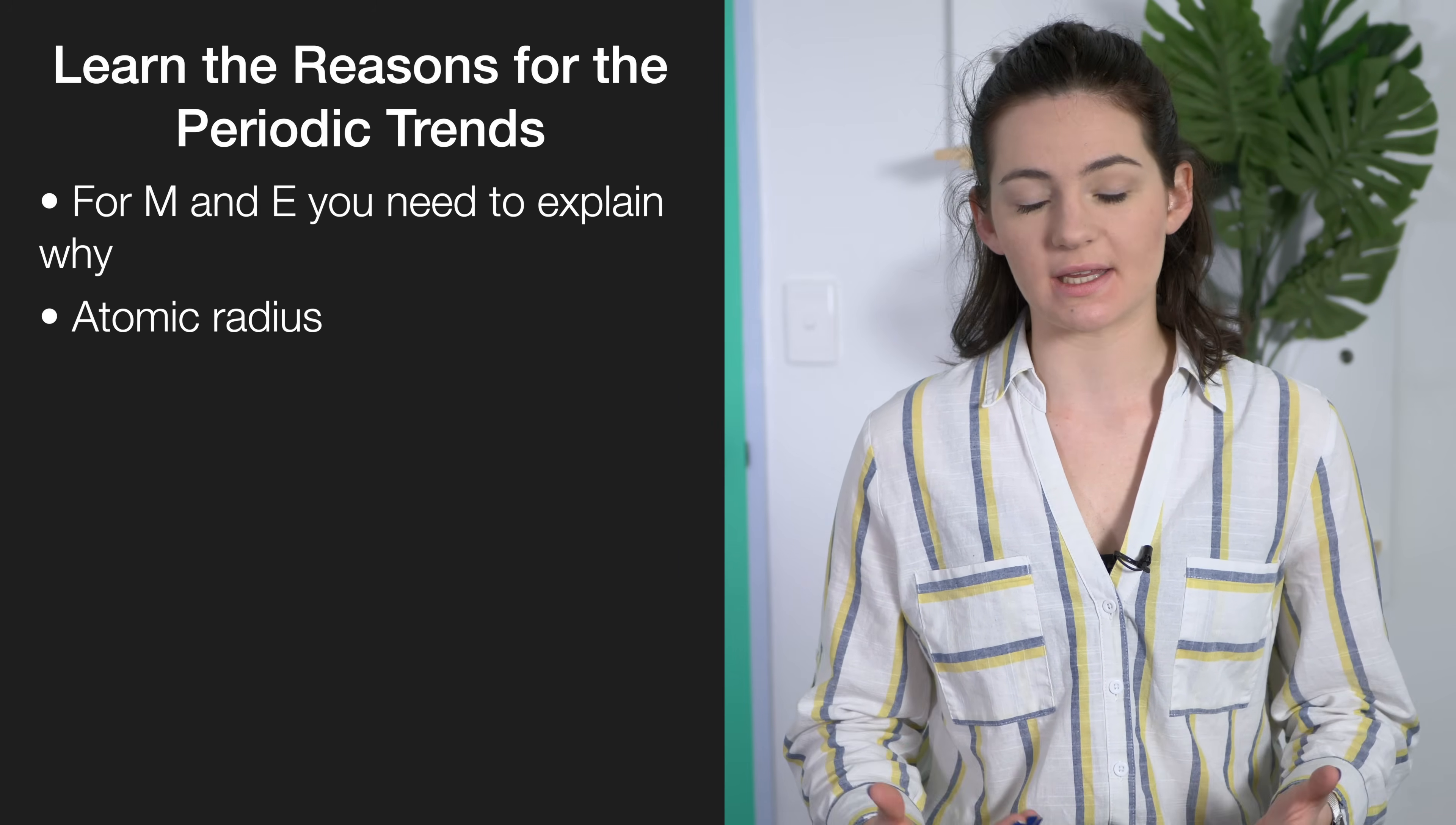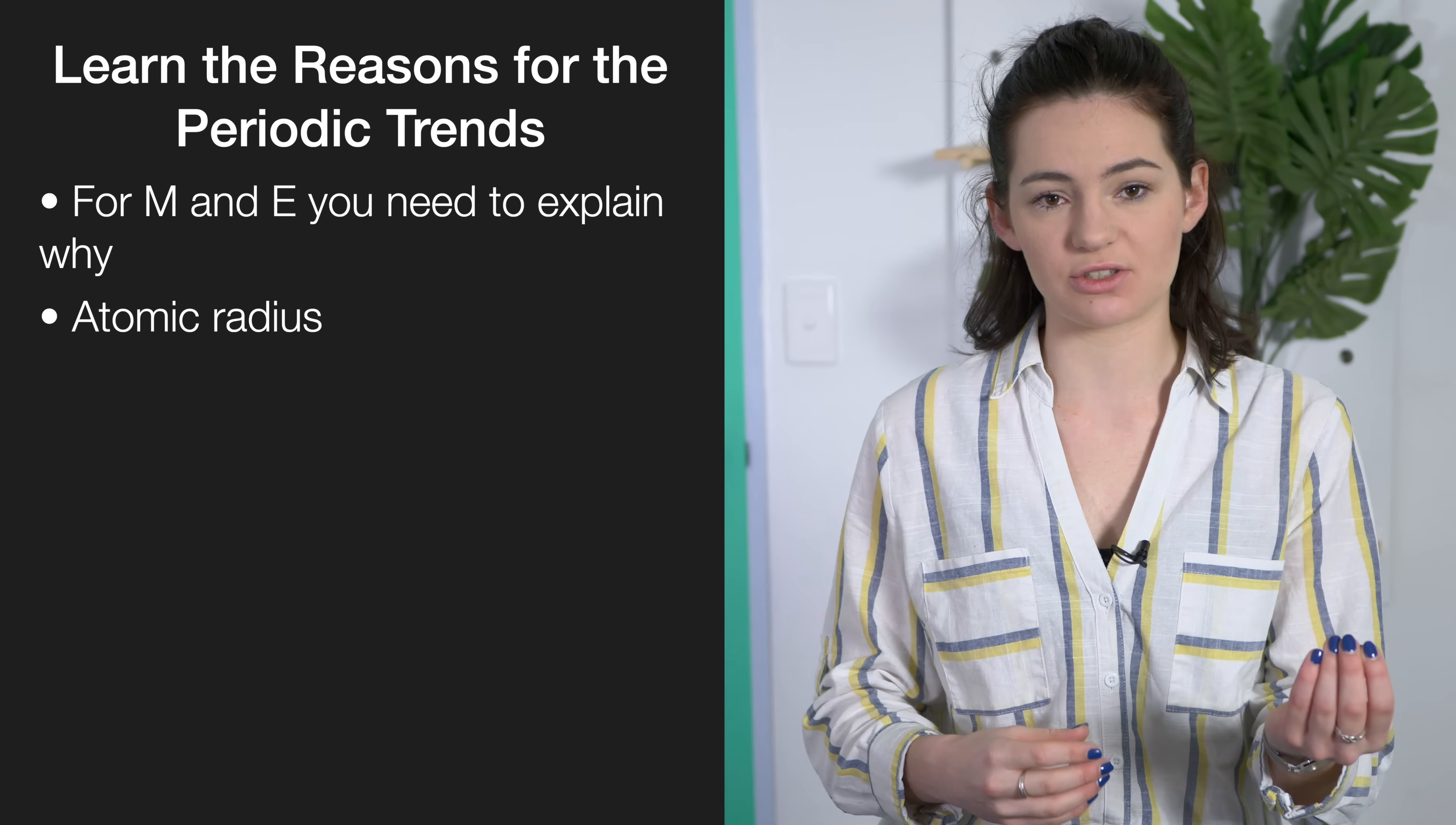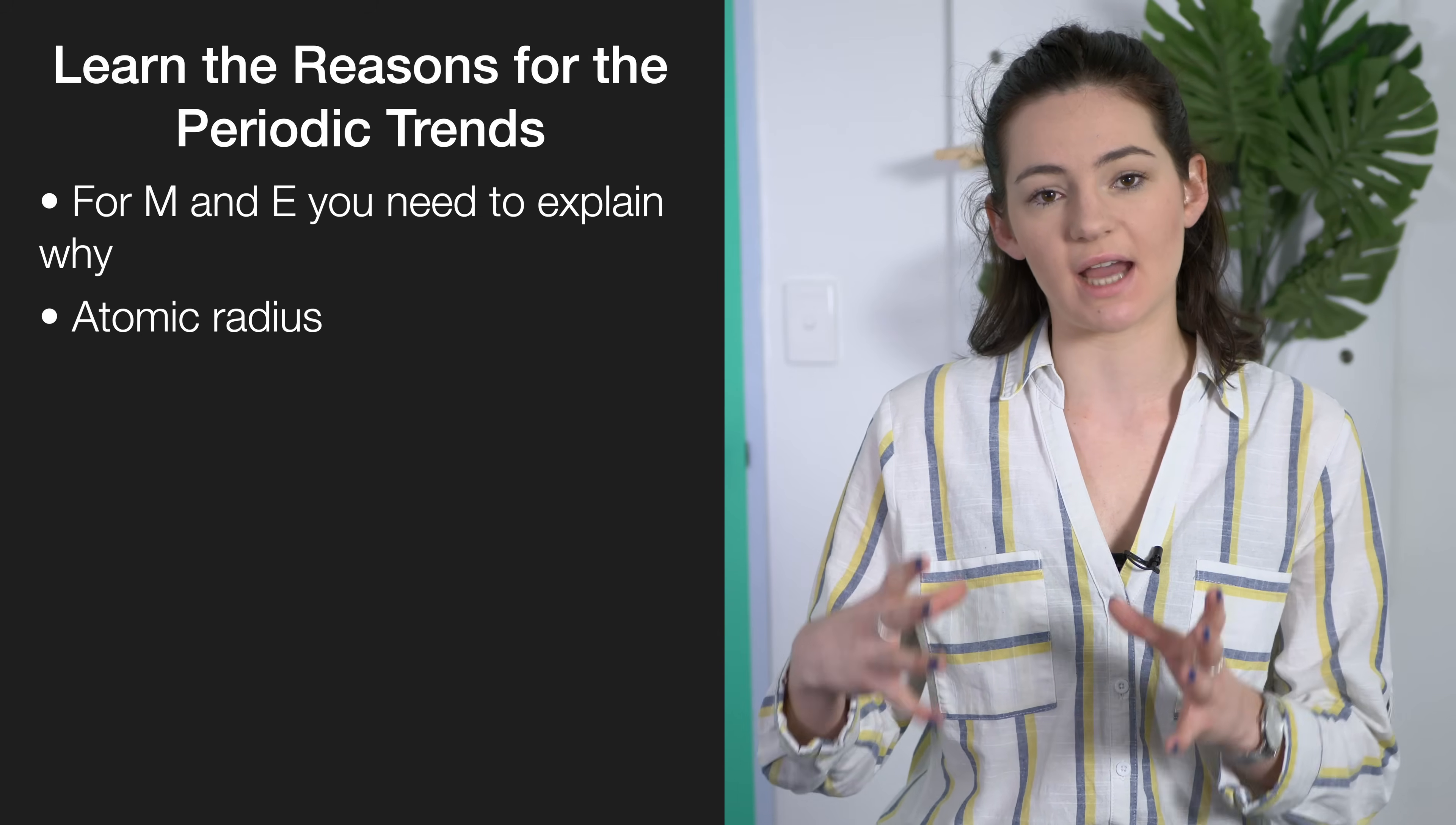For example with atomic radius, it decreases down a group because we're adding an extra shell in each time. As you move across the period it's decreasing because we're adding in an extra proton and an extra electron each time, and even though the electron is being added into the same shell, the increase in nuclear charge is pulling the atom tighter together.